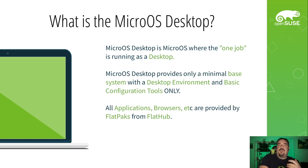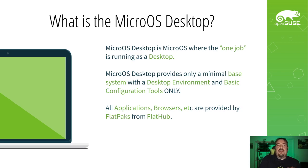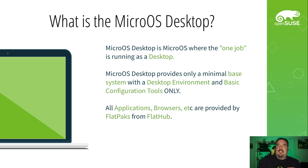A desktop isn't a nice simple thing you can containerize. So what it's evolved to is really taking the MicroOS basic system and expanding it: the MicroOS desktop includes a minimal base system with a desktop environment of your choice and basic configuration tools for that desktop environment — things like the GNOME control panel and the KDE basic suite. Then everything else — applications, browsers, LibreOffice, et cetera — are expected to come from Flatpaks from Flathub, or AppImages if you want, but typically we're very much focused on using Flathub by default.